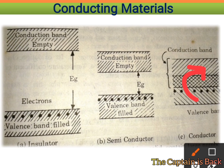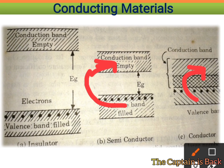In the case of a semiconductor, the energy gap is around 1 electron volt. Even a small rise in temperature above room temperature allows the balance charge carriers or electrons to easily jump to the conduction band, so conduction takes place.